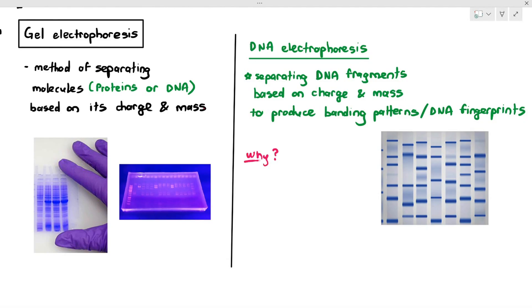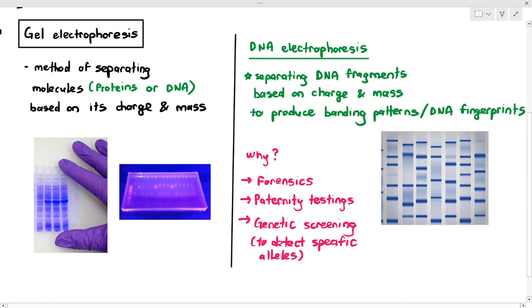Why would we actually do DNA electrophoresis? Number one, we can use it for forensics. When we talk about forensics, we are talking about crime scenes. I'm sure you've watched crime shows where they tell the suspect, we found your DNA in the crime scene. That's what they're talking about, the DNA fingerprints. We also use DNA electrophoresis for paternity testing when we want to confirm whether the child came from the father's DNA. We can also use it for genetic screening because we can detect specific alleles in a person. I will show you how DNA electrophoresis is used in genetic screening at the last part of this video.